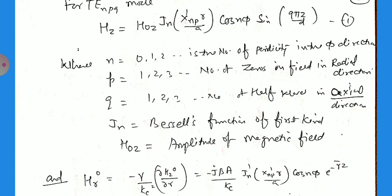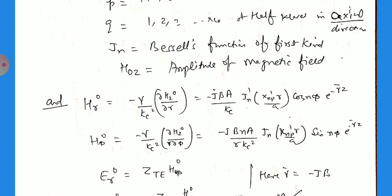If we want the other components of the magnetic field, the radial component Hr0 equals minus gamma by kc² times del Hz0 by del r. That is equal to minus j beta n by r kc² times Jn of x'np r/A times sin(n phi) times e^(-gamma z).